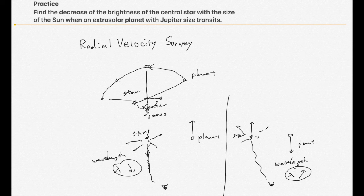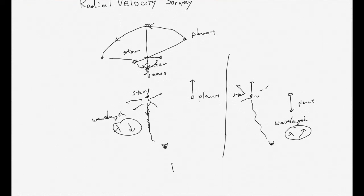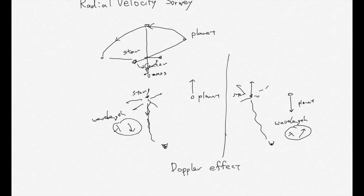So even though we cannot detect light directly from a planet, we are able to find the existence of a planet through the Doppler effect. We call it the Doppler effect of light. So the first extrasolar planet around 51 Peg was discovered using this Doppler effect — we call it the radial velocity survey.